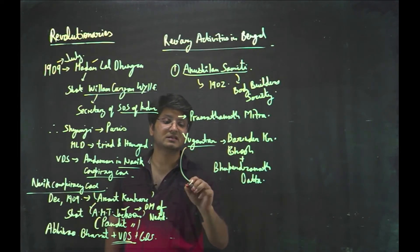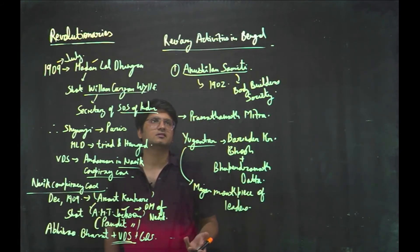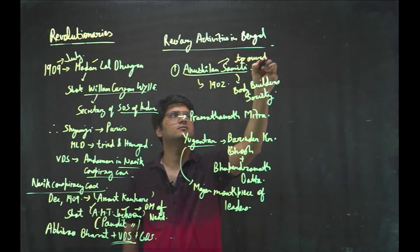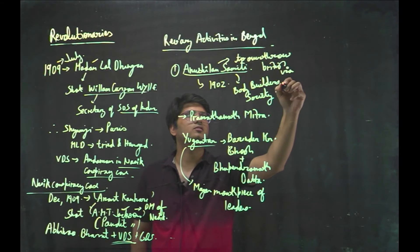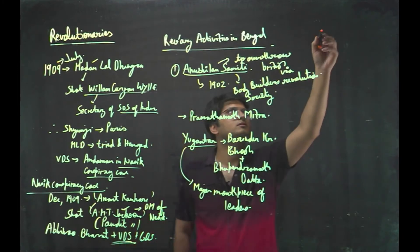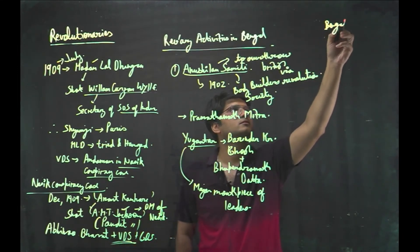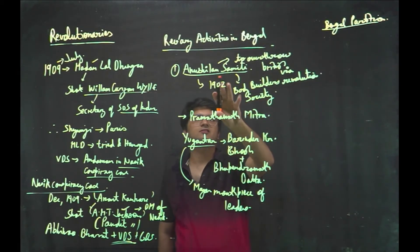Bhupendra Nath Datta is brother of Swami Vivekananda and Barindra Kumar Ghosh is brother of Aurobindo Ghosh. They started the Yuga Antar. They were also in Anushilan Samiti. And this Yuga Antar is a major mouthpiece of the leaders. And in the first instance Anushilan Samiti was set up to overthrow British via revolution. Post partition of Bengal.